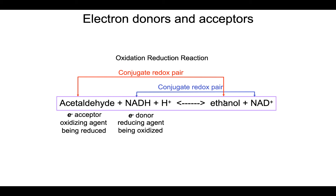Acetaldehyde, because it is being reduced, is called the oxidizing agent. It is stealing electrons from NADH, thus becoming ethanol. NADH is giving electrons to acetaldehyde, thus becoming NAD+. So NADH is our reducing agent, because it's becoming oxidized. Acetaldehyde is our oxidizing agent because it is stealing electrons and itself is being reduced. Make sure that you can apply all three of these terms to the various conjugate redox pairs in reactions like this.